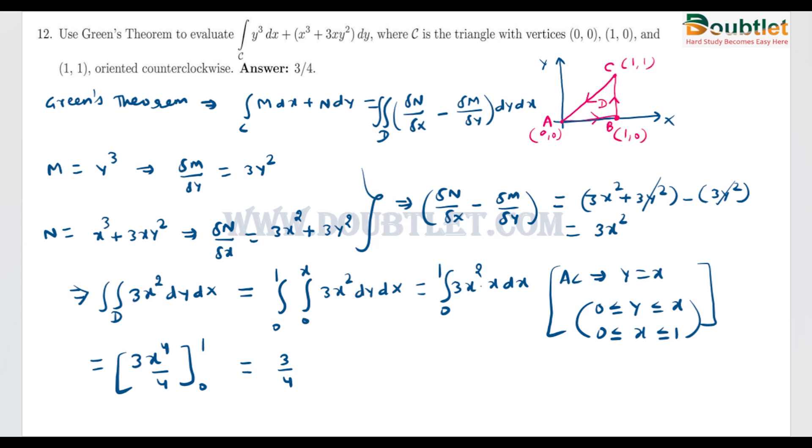3/4 is constant. It will be thrown out of the box and this will be 1⁴ which is 1 minus 0. Basically the value of this integral by Green's theorem is 3/4 and here the answer is also given.